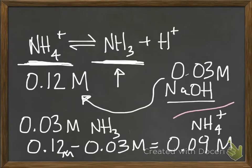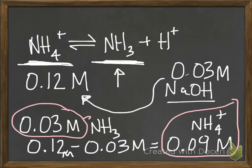Now you have molar ratio values to add into your equation. It's 0.09 moles per liter for NH4+ and 0.03 moles per liter for NH3.